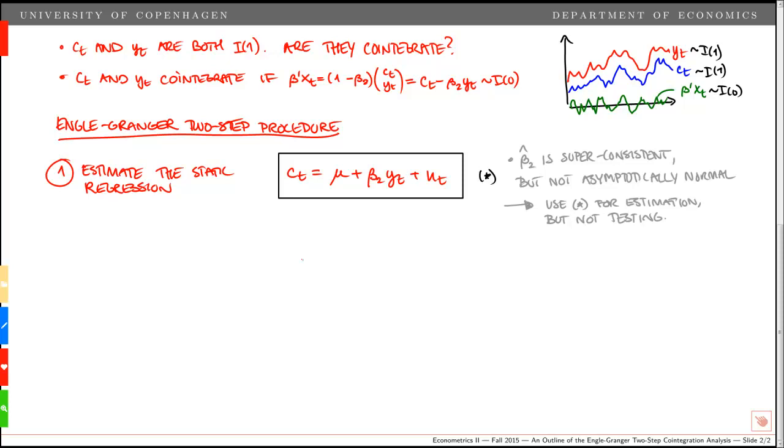What we want to test now is whether or not the residual ut is stationary. Note that if ct and yt cointegrate, then the residual term ut must be a stationary process. So we test for a unit root in ut hat, which is just ct minus mu hat minus beta 2 hat yt. Note that this corresponds to testing for no cointegration. We can do this based on the usual augmented Dickey-Fuller test.